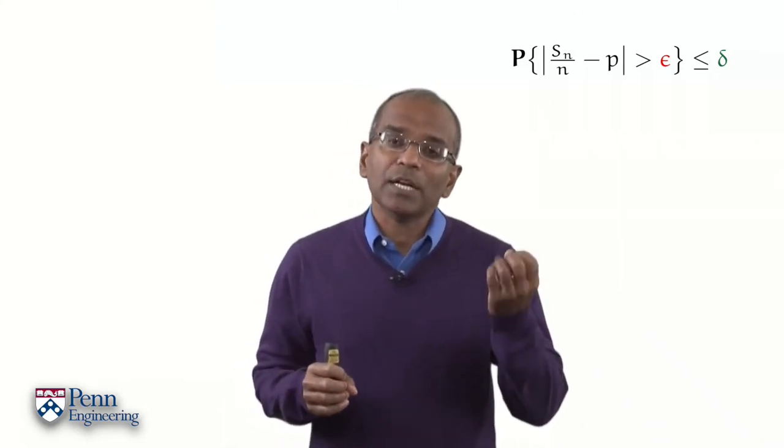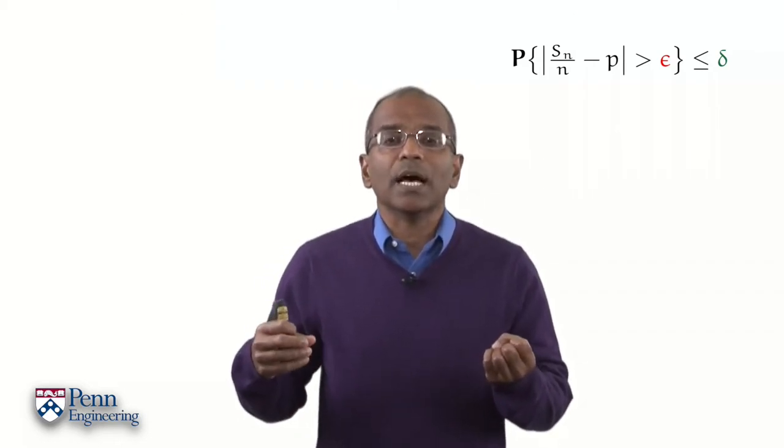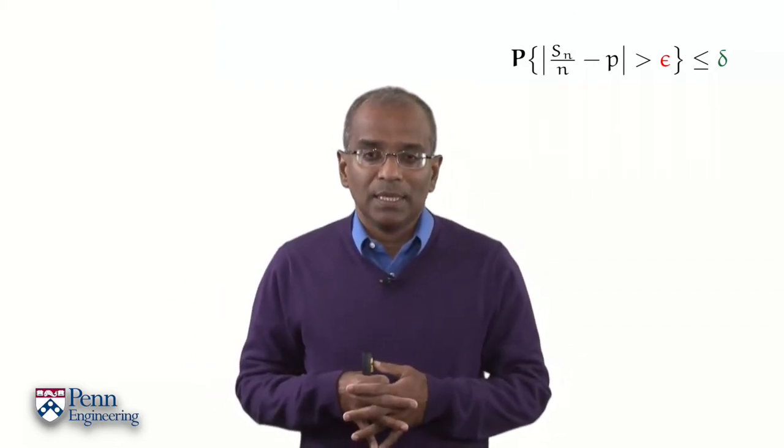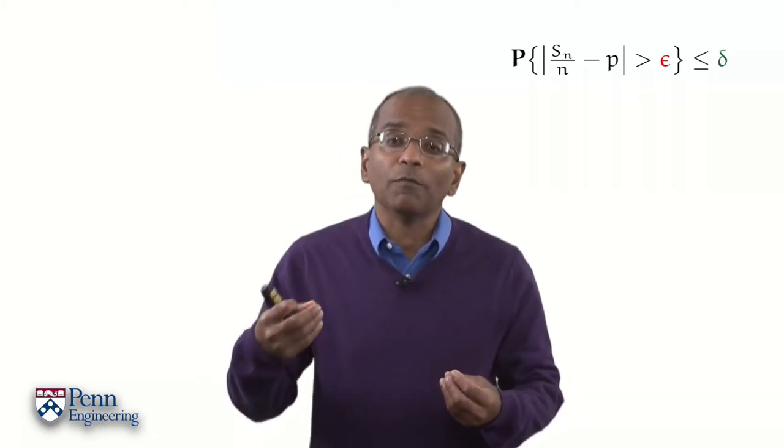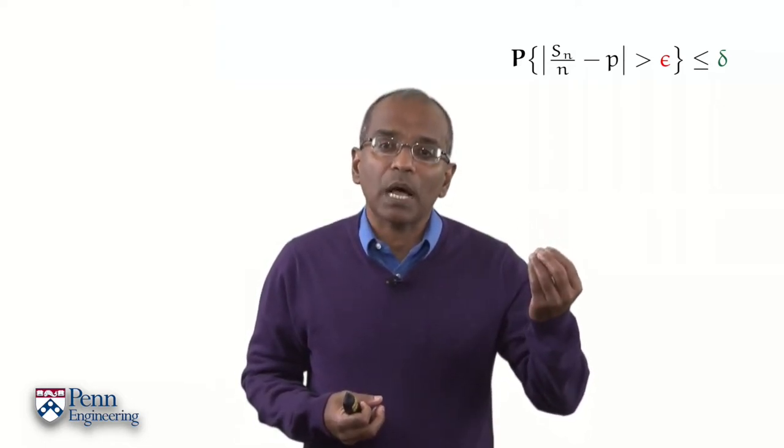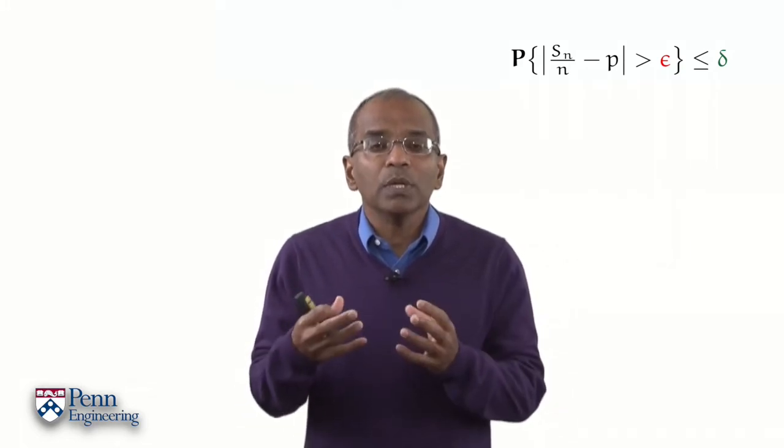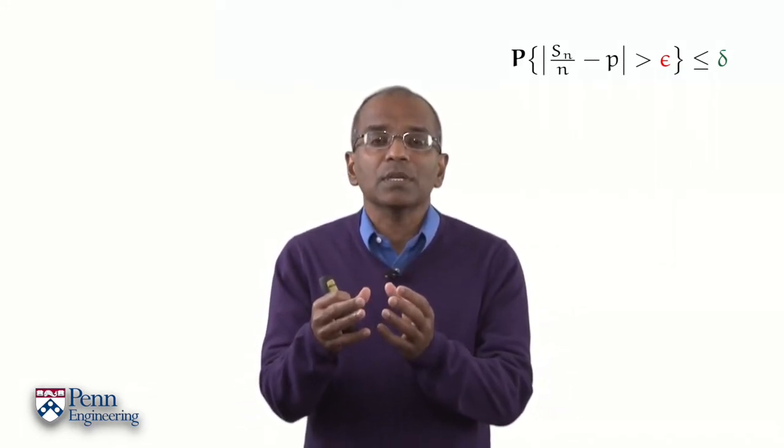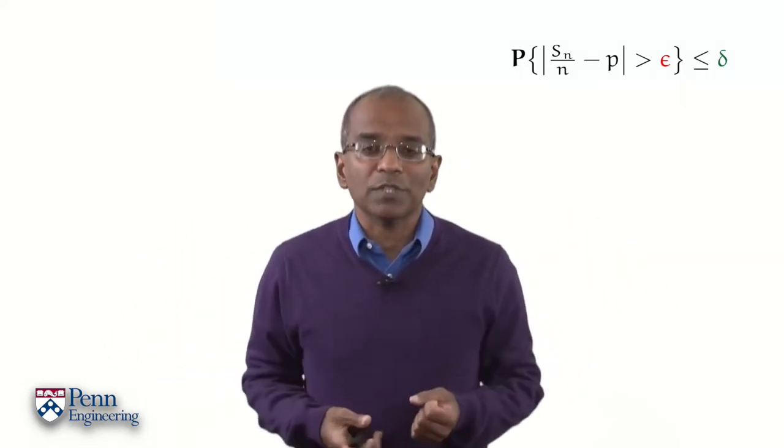If one is given an error tolerance epsilon and a confidence that is desired of 1 minus delta, what size of sample as a function of the allowed error epsilon and as a function of the confidence parameter delta? What size of sample will get us estimates which are within these error parameters within the desired confidence?